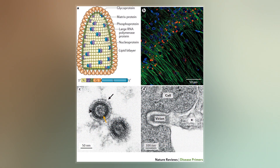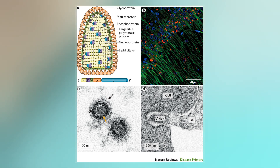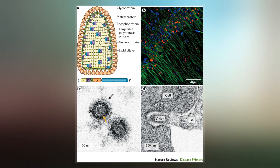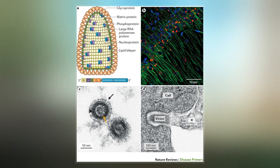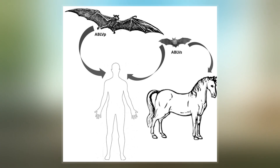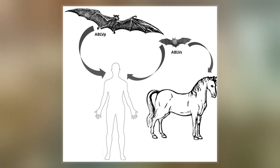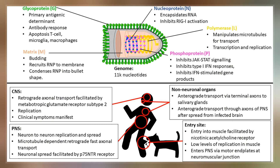The structure consists of a spiked outer envelope, a middle region consisting of matrix protein M, and an inner ribonucleocapsid complex region consisting of the genome associated with other proteins.